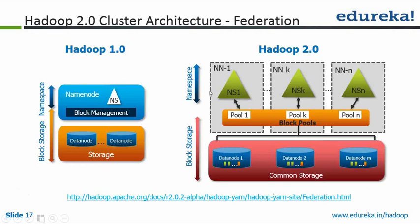Instead of using one set of NameNodes, in Hadoop 2.0 we have introduced a Federation where you can use multiple sets of NameNodes. Each set has its own active NameNode, passive NameNode, and secondary NameNode.